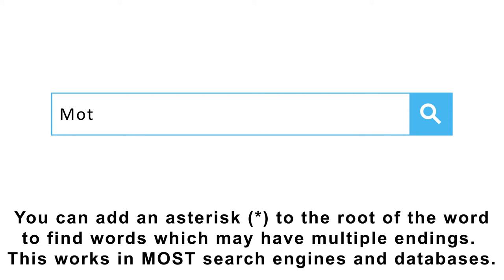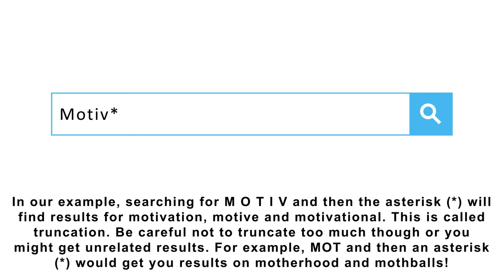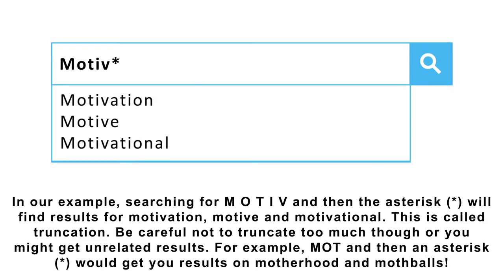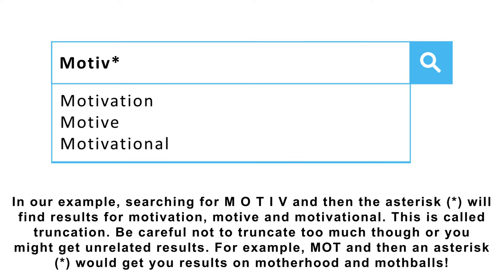You can add an asterisk to the root of a word to find words which may have multiple endings. This works in most search engines and databases. In our example, searching for MOTIV* will find results for motivation, motive and motivational. This is called truncation. Be careful not to truncate too much though, or you might get unrelated results — for example, MOT* would get you results on motherhood and mothballs.